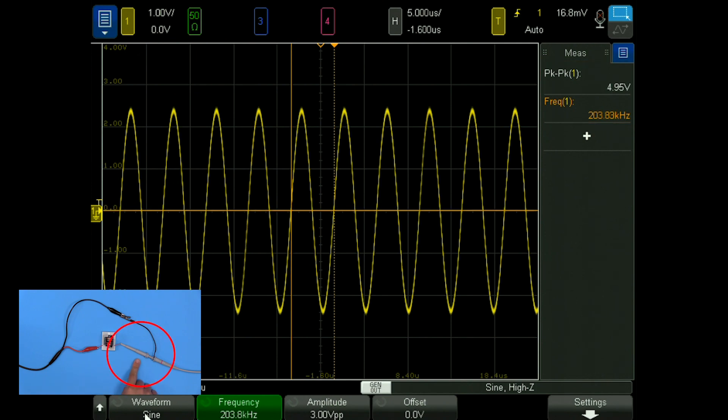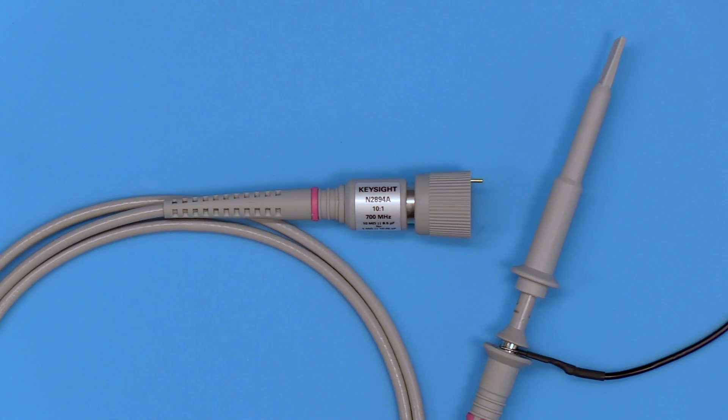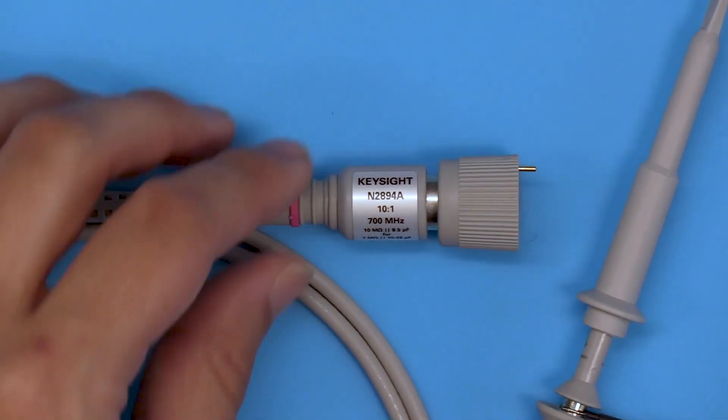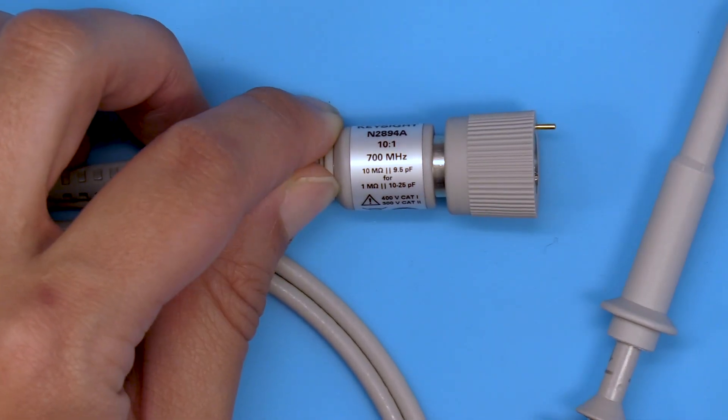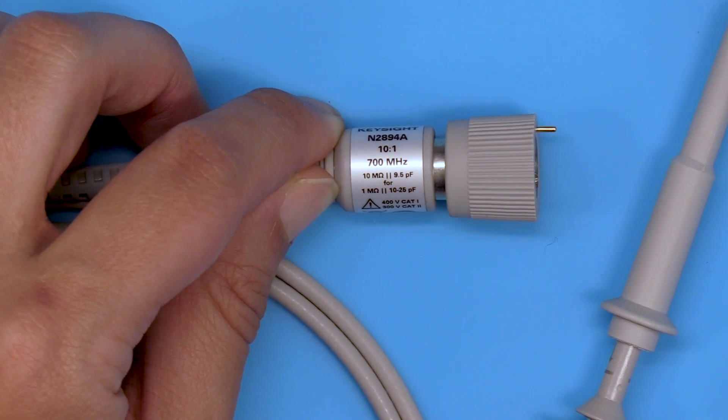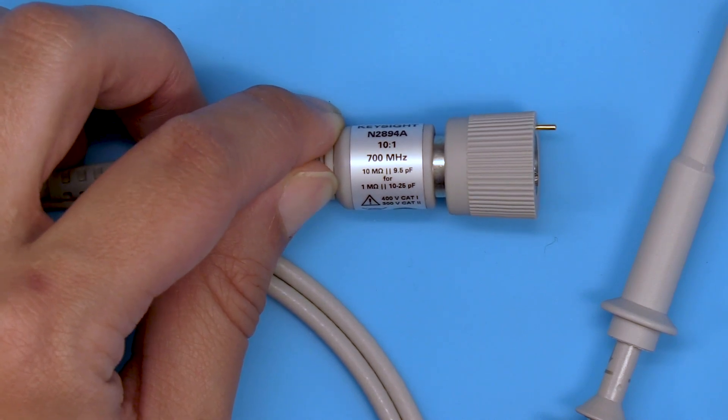I'm starting to suspect this probe could be the culprit. Let's take a closer look at this probe. We can see it has extra capacitance and resistance. This is enough to cause reflections onto our signal due to an impedance mismatch.